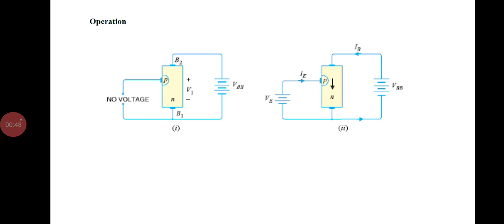The device normally has B2 positive with respect to B1. If the voltage VBB is applied between B2 and B1 with the emitter open, a voltage gradient is established along the N-type bar. The voltage V1 between emitter and B1 establishes a reverse bias of the P-N junction, and the emitter current is cut off. A small leakage current flows from B2 to emitter. If a positive voltage is applied at the emitter, the P-N junction remains reverse biased as long as the input is less than V1.